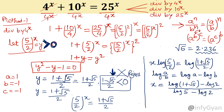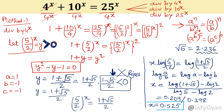Now put the value of root 5 as 2.236, log 2 as 0.3010, and log 5 as 0.6990. That value will come out 0.209 divided by 0.398, so x ultimately comes out to 0.525. We will solve this question by two more methods, so mainly the value to remember is approximately 0.52.